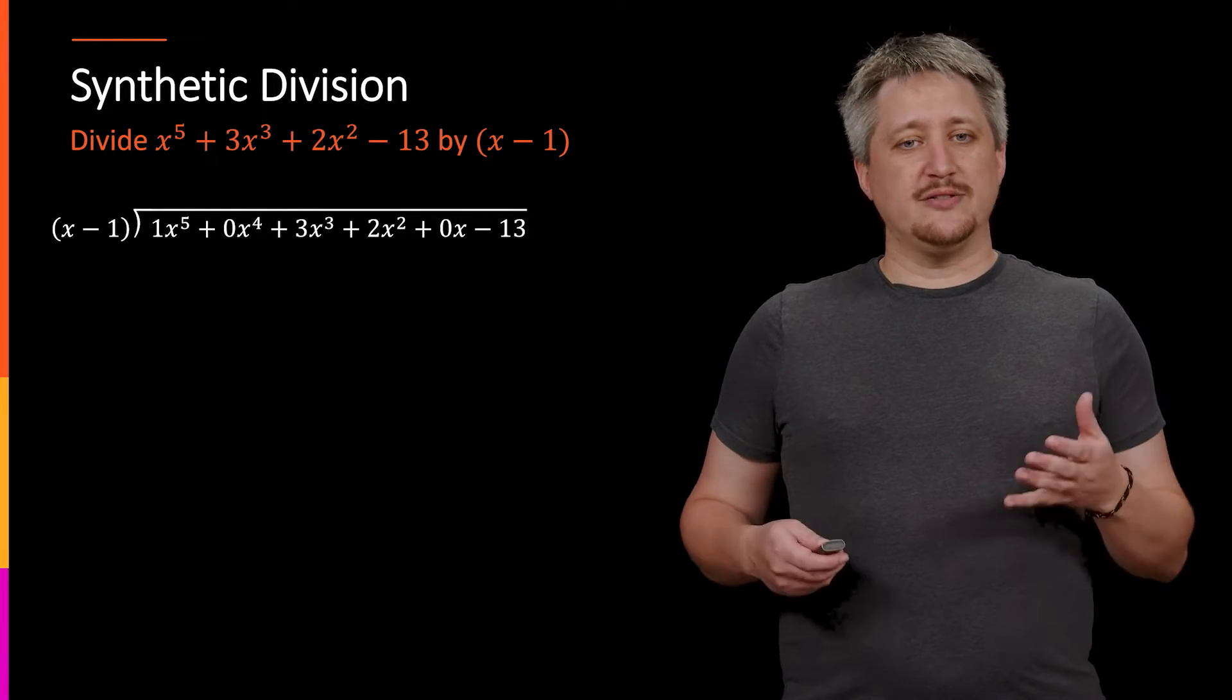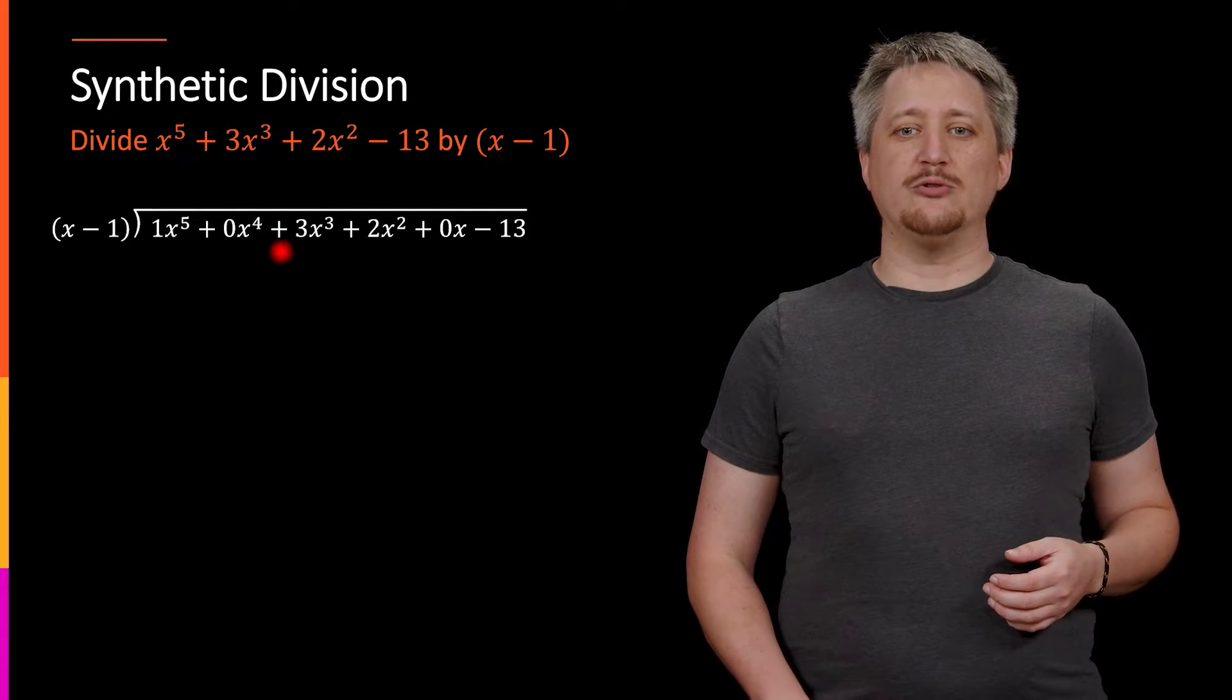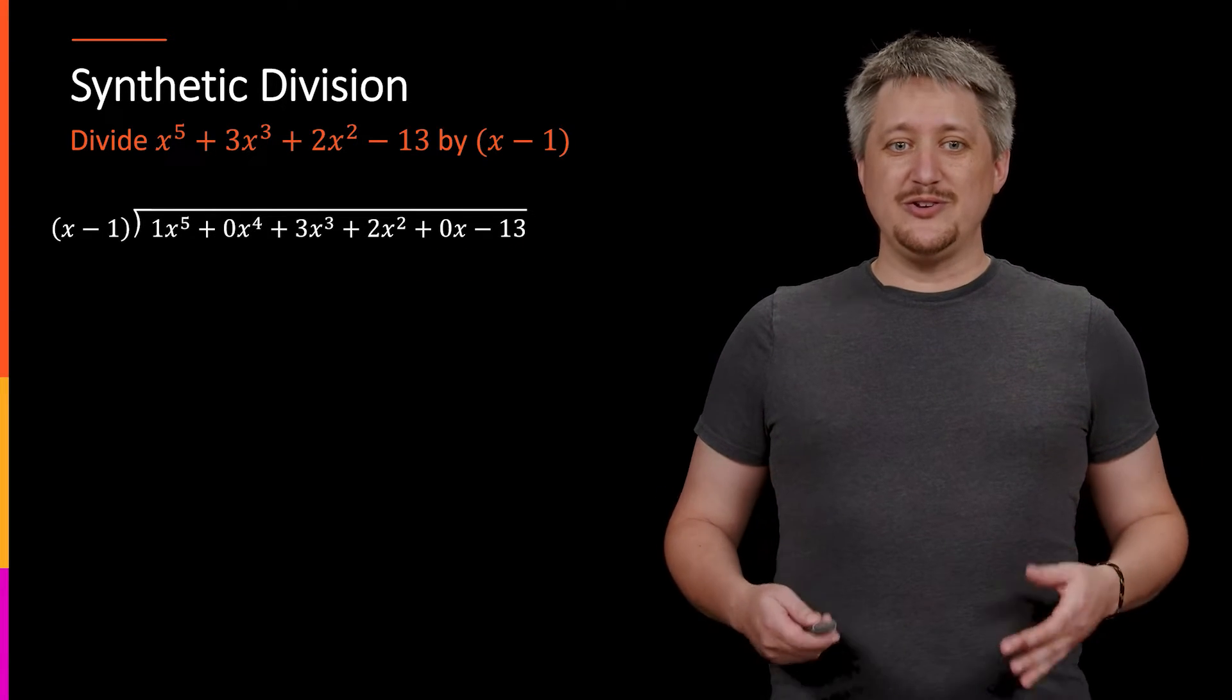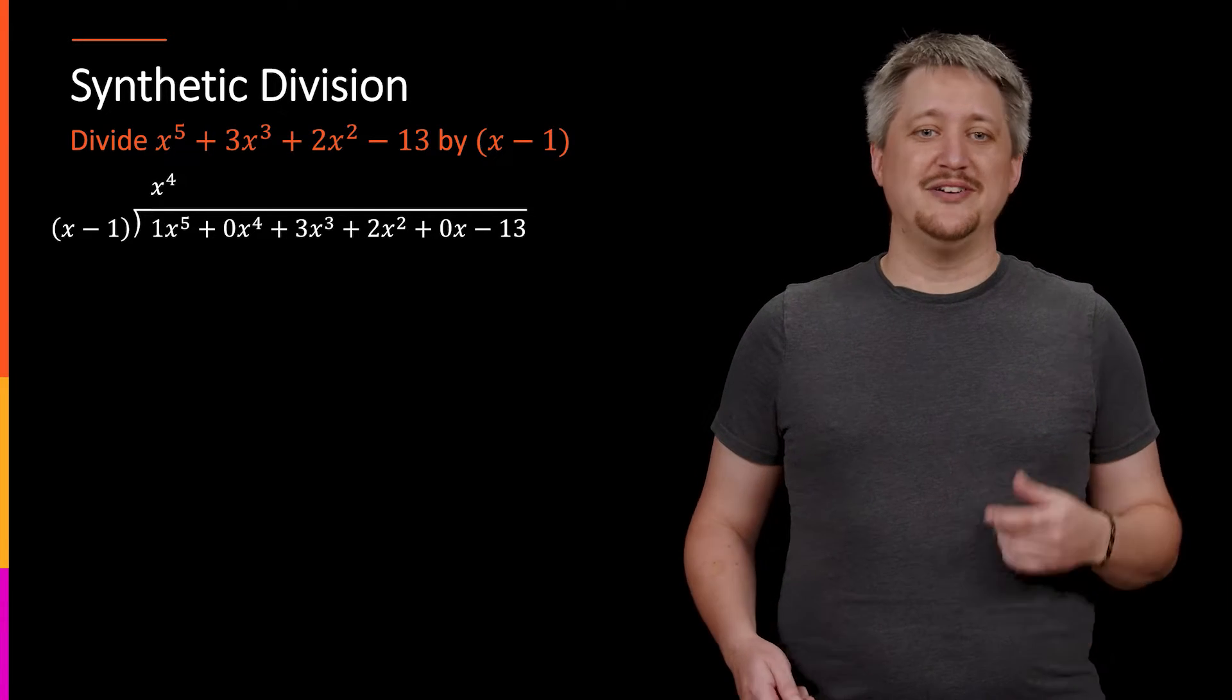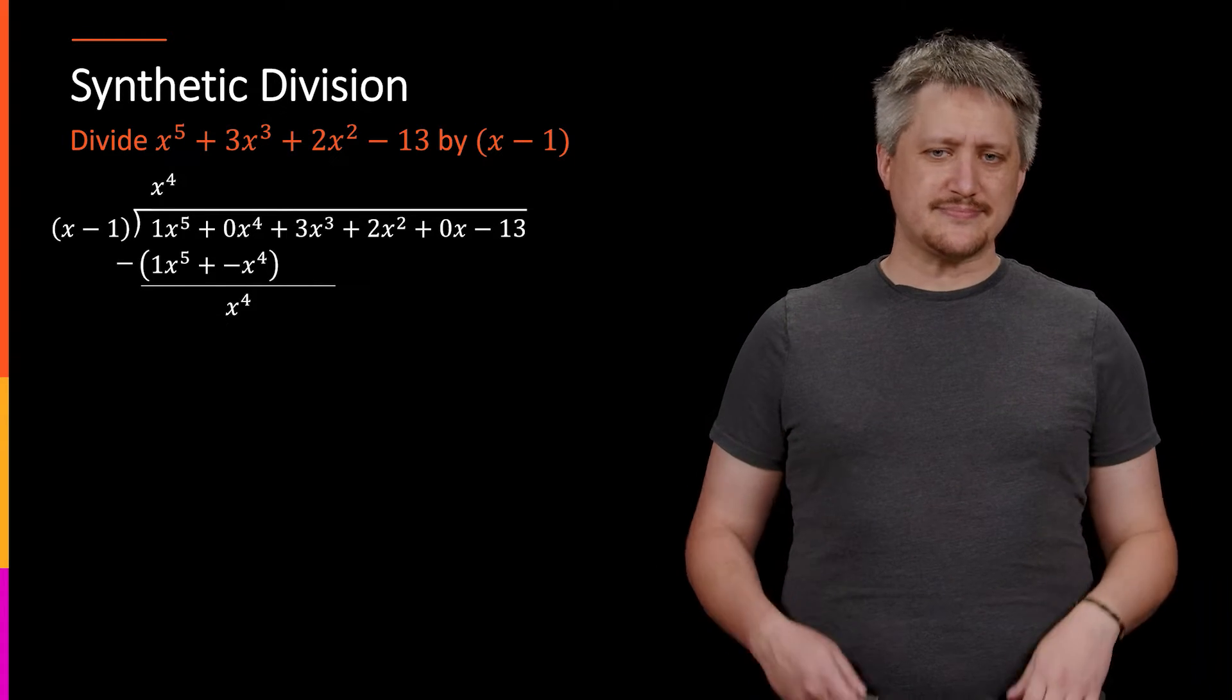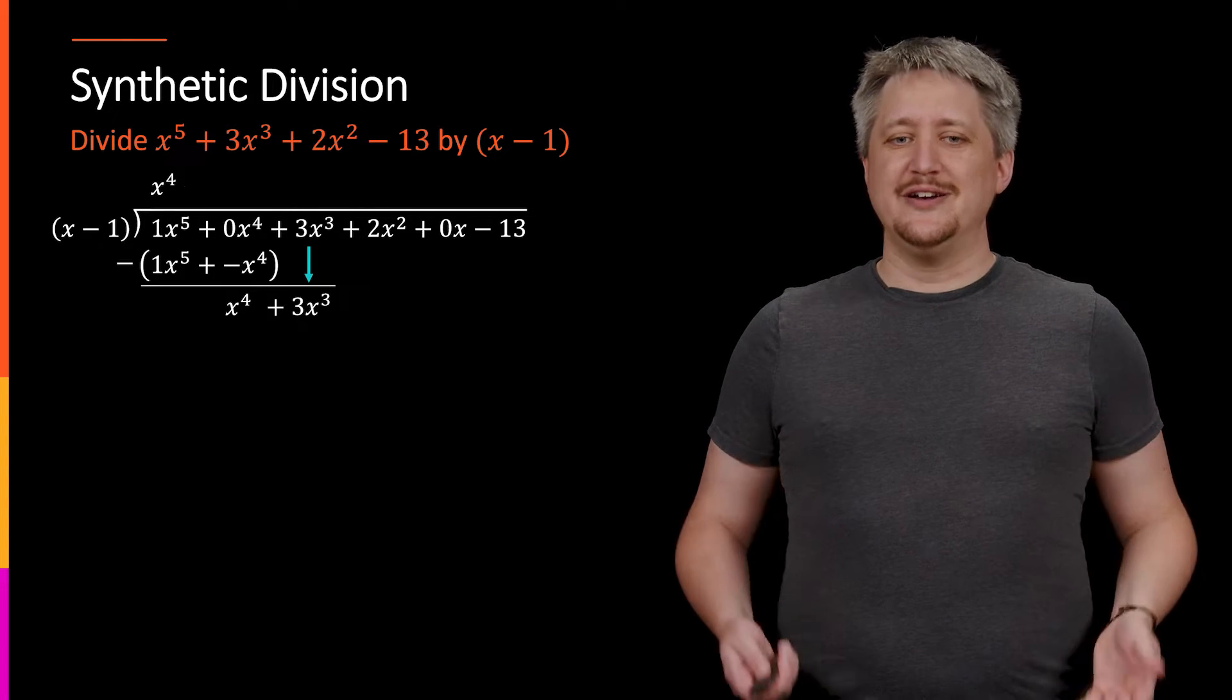So recall, looking at this here, we have this x minus 1 dividing into this ginormous polynomial. We do the same thing we usually do. We take the first term and divide it by the first term of the thing we're dividing by, get x to the fourth, multiply that against what we're dividing by, subtract off. And we keep going, doing this. We drop the next term, do that same division, we're going to do x cubed, multiply x cubed against it, subtract off.